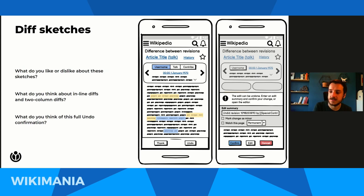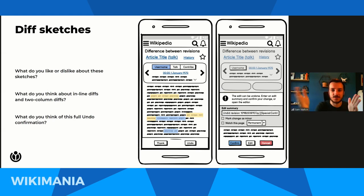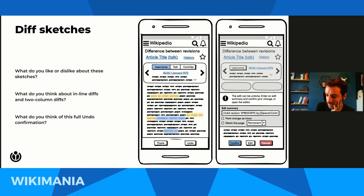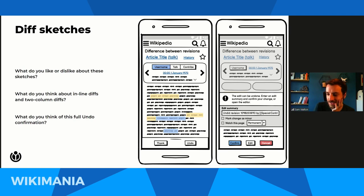Mike asks how you add a custom edit summary when the box is already filled with automatic text. That's a question we'll have to answer — probably the text could be left-aligned so you can add your comment at the end, like on desktop. These are very early initial explorations so those kinds of questions we'll get into if we move forward. There's also a link in chat to a good gadget for partial reverts. Like other product teams, we often look at gadgets and user scripts for inspiration — if editors are already fixing a problem themselves, that's a good signal we should consider that approach in the software by default.